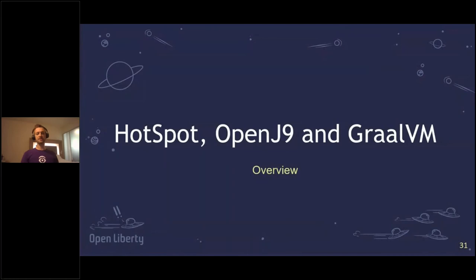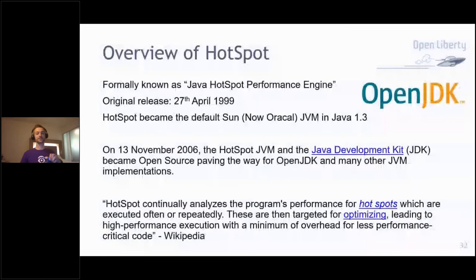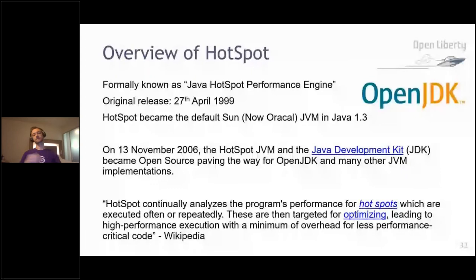A quick overview of three main JVMs — starting with HotSpot. Everyone knows this JVM, it's been around since its original release in 1999. This was what Sun created, which Oracle now owns. On the 13th of November 2006, Oracle open-sourced this JVM, which paved the way for many different flavors of JVM. It's called HotSpot because it continually analyzes your program's performance for hot spots — code executed often or repeatedly — which are then targeted for optimization, leading to high-performance execution with minimum overhead.